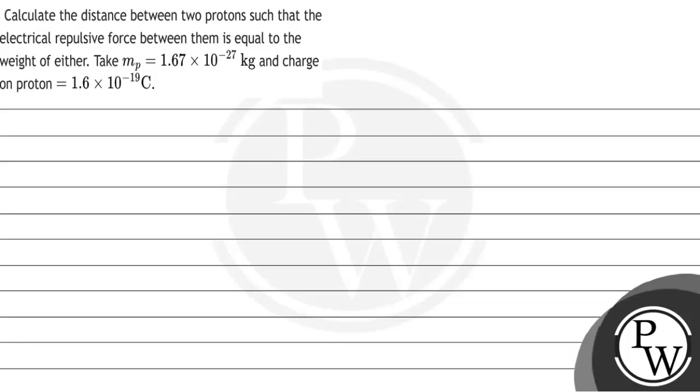Hello, let's see the question. The question is: calculate the distance between two protons such that the electrical repulsive force between them is equal to the weight of either. Take mass of proton mp = 1.67 × 10^-27 kg and charge on proton = 1.6 × 10^-19 Coulomb.